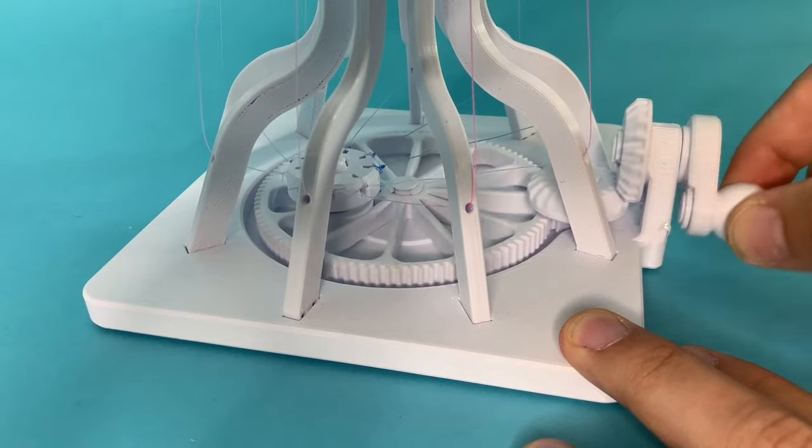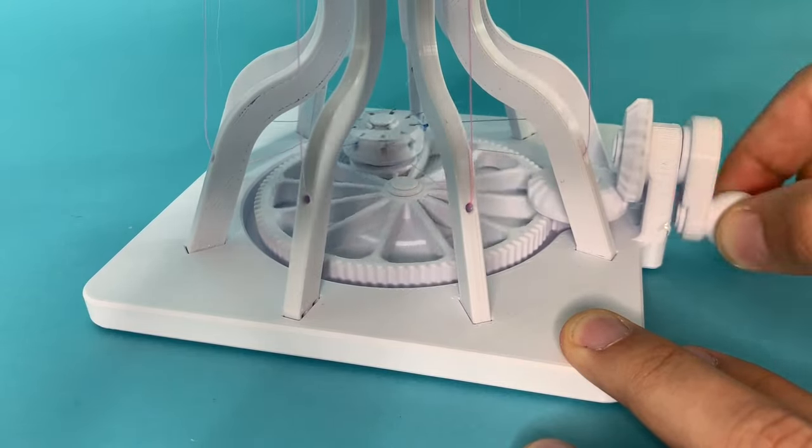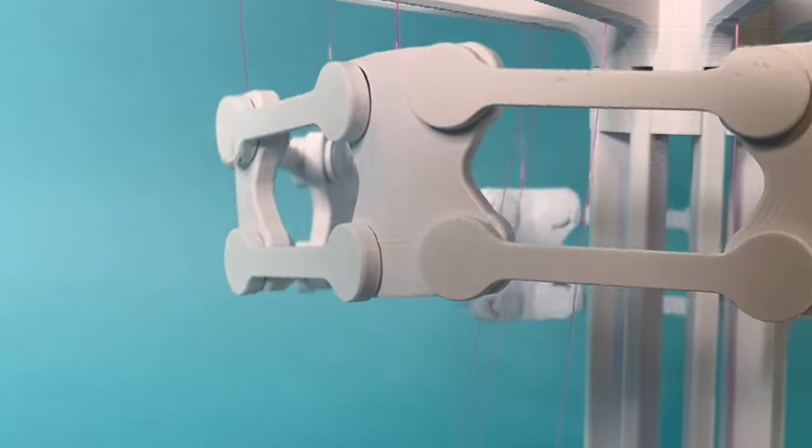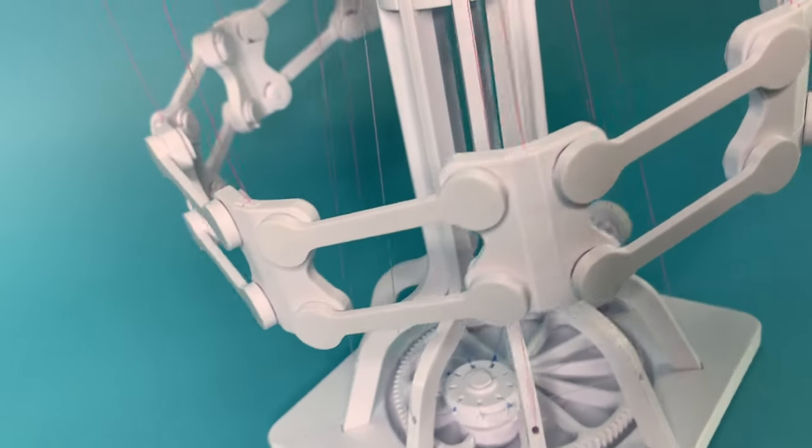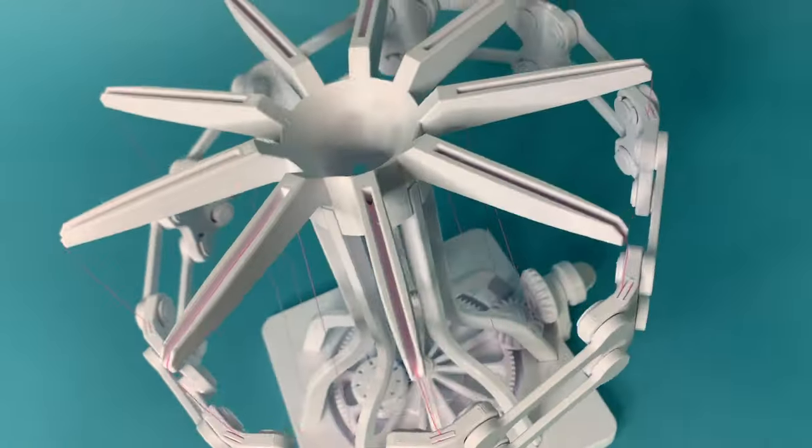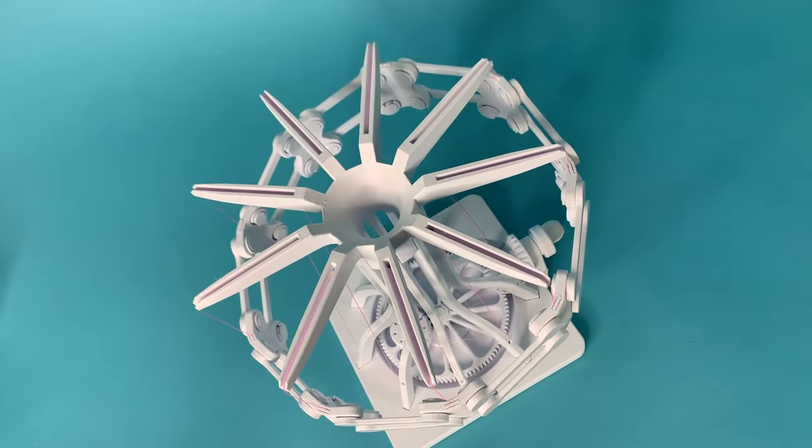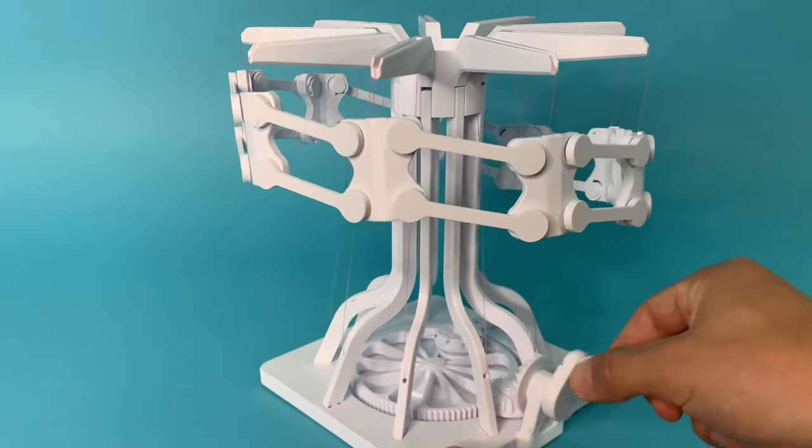As the string mount makes its way around the circle, it pulls and releases the string, causing the hanging segment to move up and down. When you take this movement and translate it around the entire circle in this transition, you get this smooth, beautiful wave pattern.